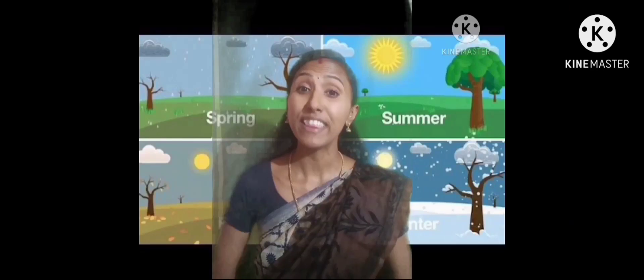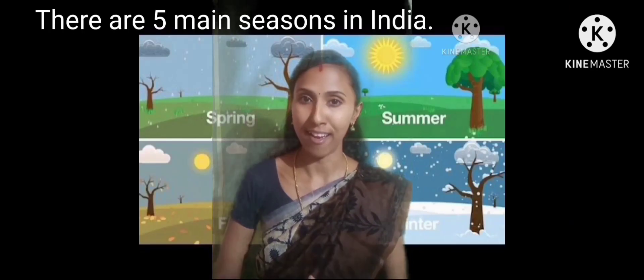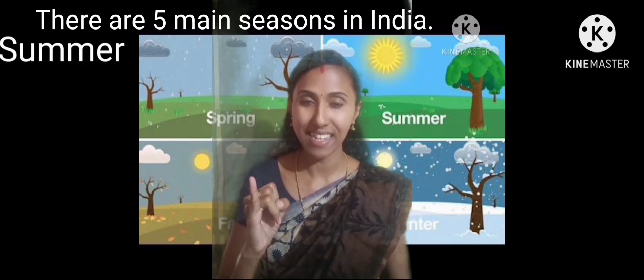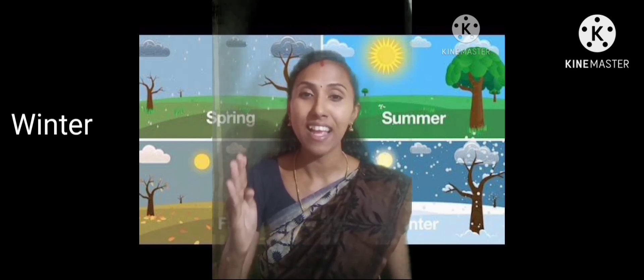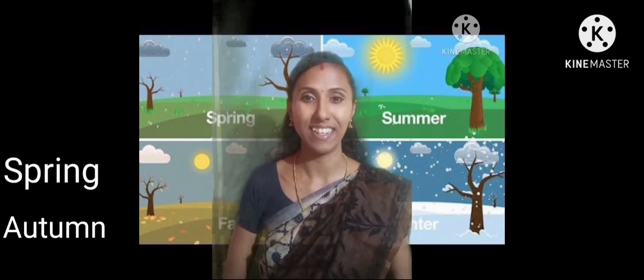Now we are going to learn about seasons. There are five main seasons in India. They are the summer season, rainy season, winter season, spring season, and autumn season.